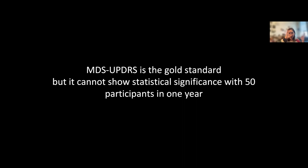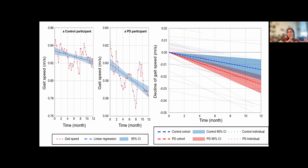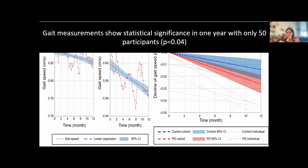Interestingly, the MDS-UPDRS has so much noise that with only 50 patients over one year, you would not see statistical significance in the change — your clinical study would fail. But with our passive gait measurement, looking at the whole cohort — controls in blue, Parkinson's patients in red — even with such a small study of 50 participants over one year, we can show statistical significance in the change and status of the patients.